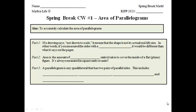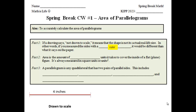Let's take a look at Fact 1. It says: if a drawing says 'not drawn to scale,' it means that the shape is not its actual real-life size. In other words, if you measured the size with a ruler, it would be different than what it says on the paper. Go ahead and write in the word 'ruler' there. I want to explain what 'not drawn to scale' means. That line segment is 4 inches long — if you took out your ruler and measured it on your screen, it would be 4 inches. So that is something that is drawn to scale.